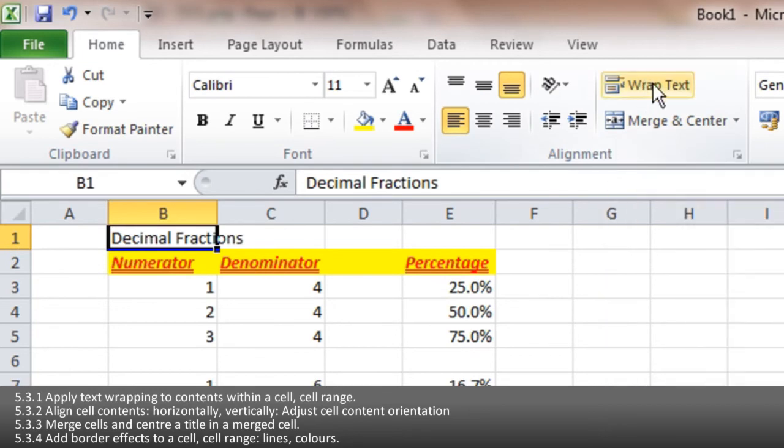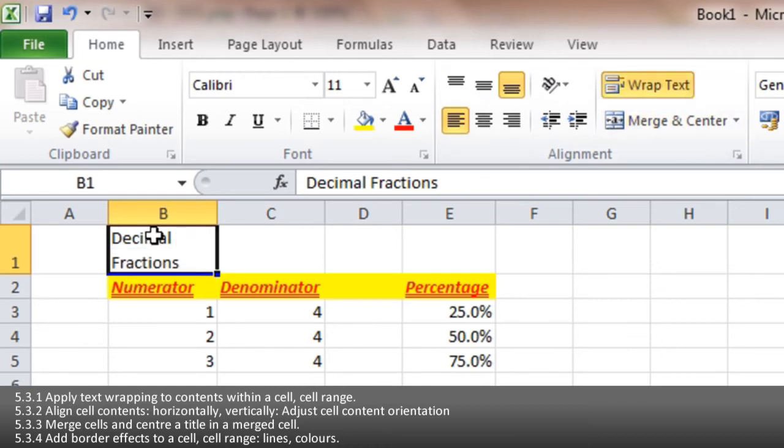Text wrapping is in this alignment tab, and it simply means where this 'fractions' is leaking out from B1 into C1. We click on wrap text, it makes sure it fits within the cell and makes the cell taller to allow it to do so.